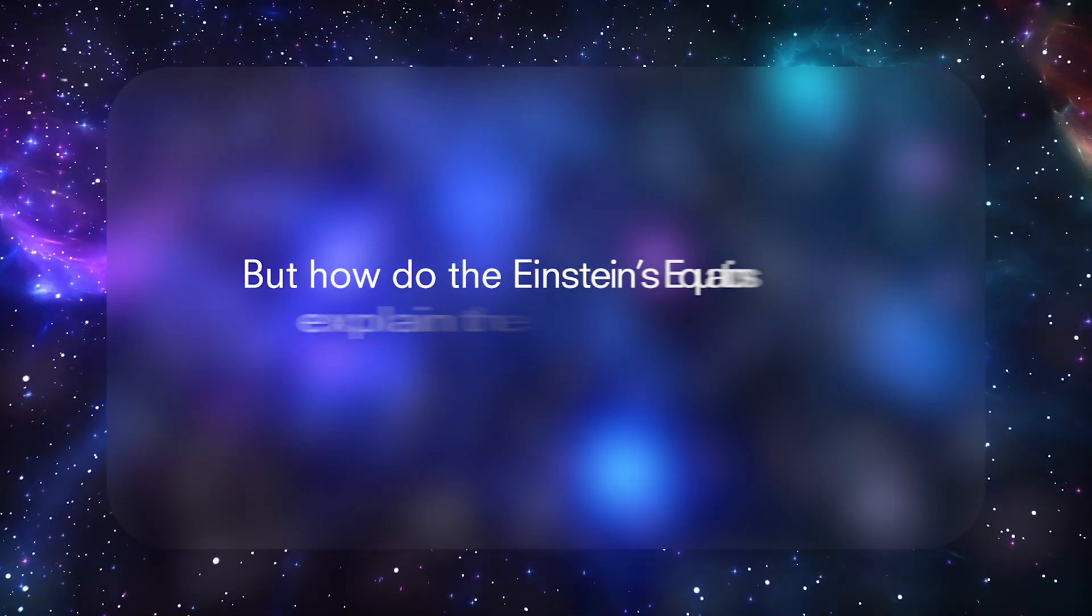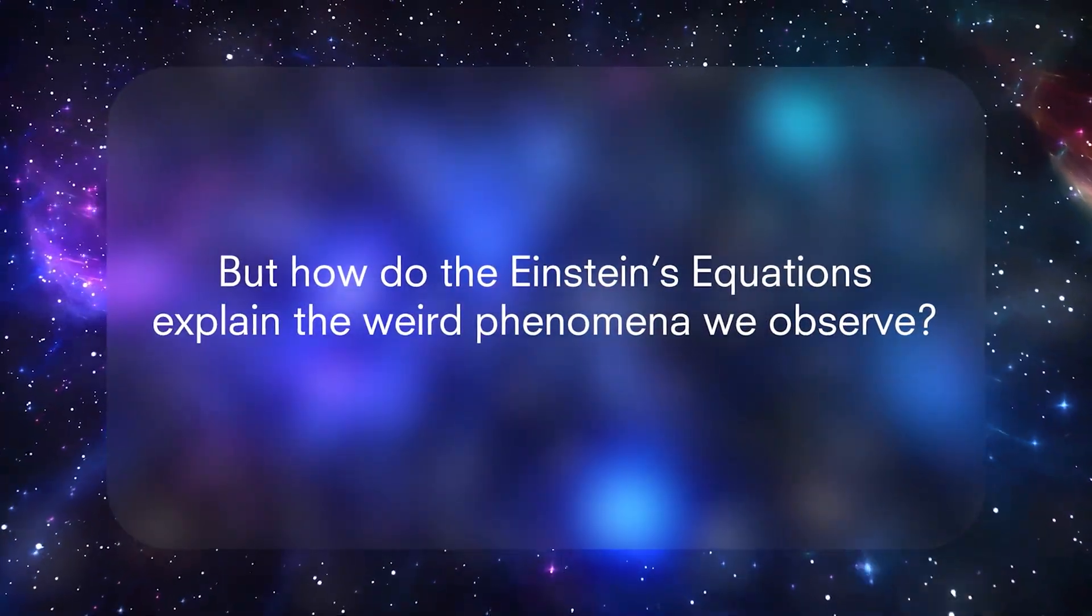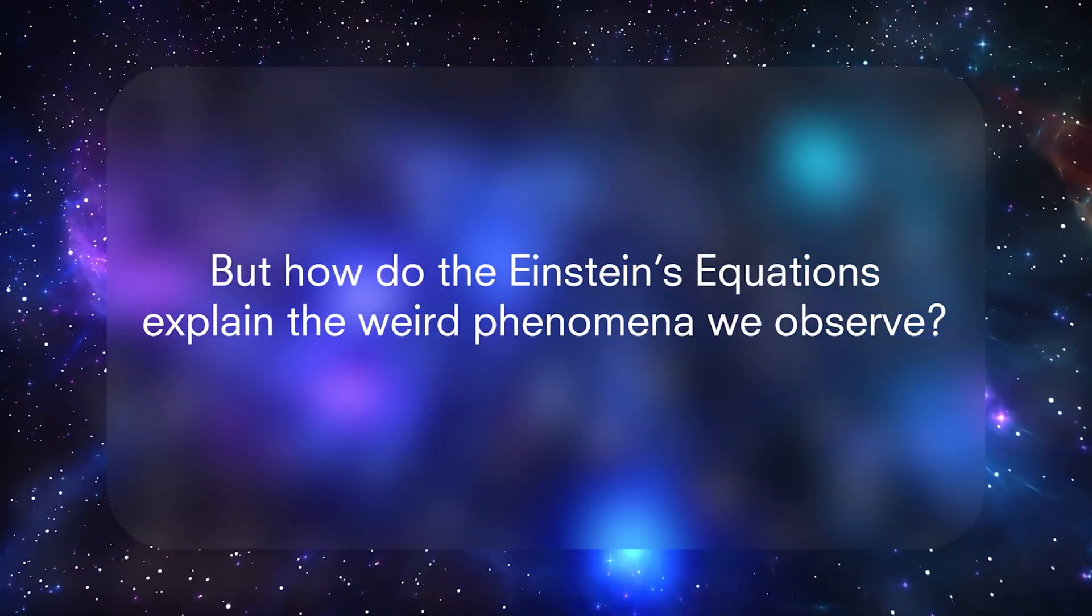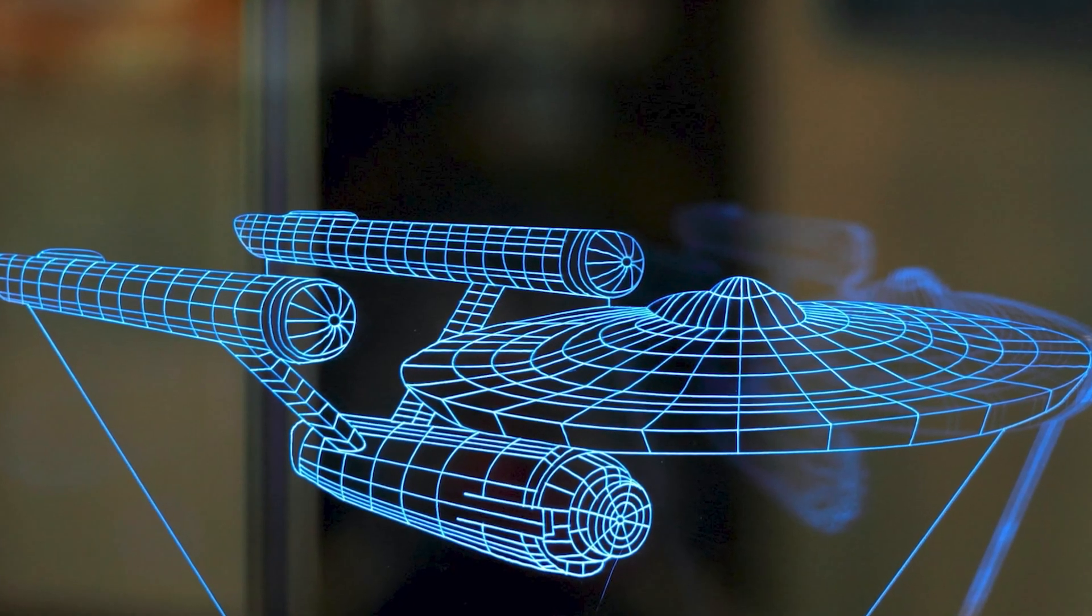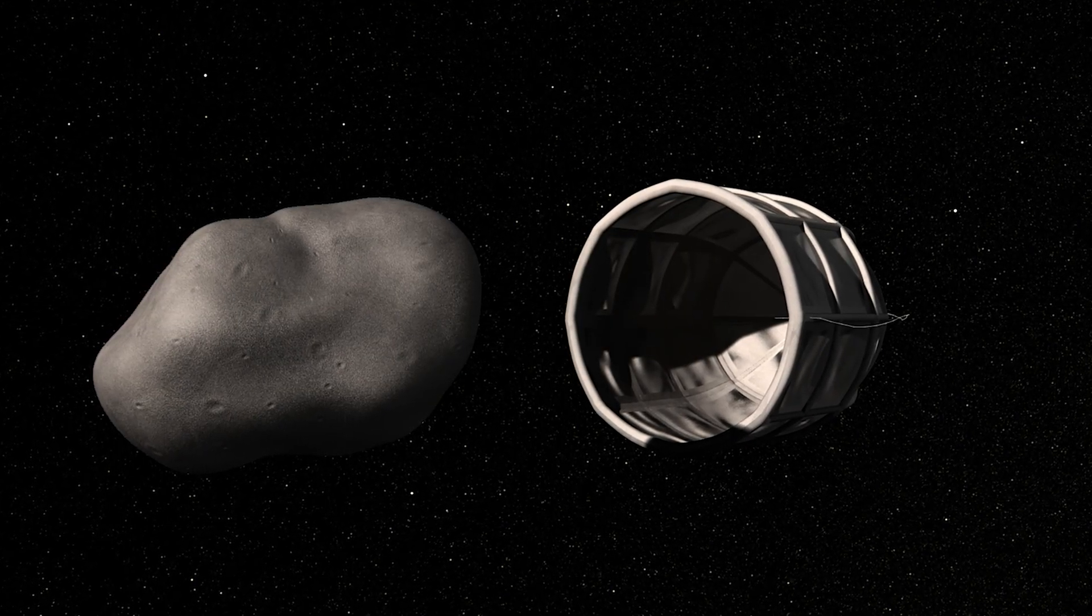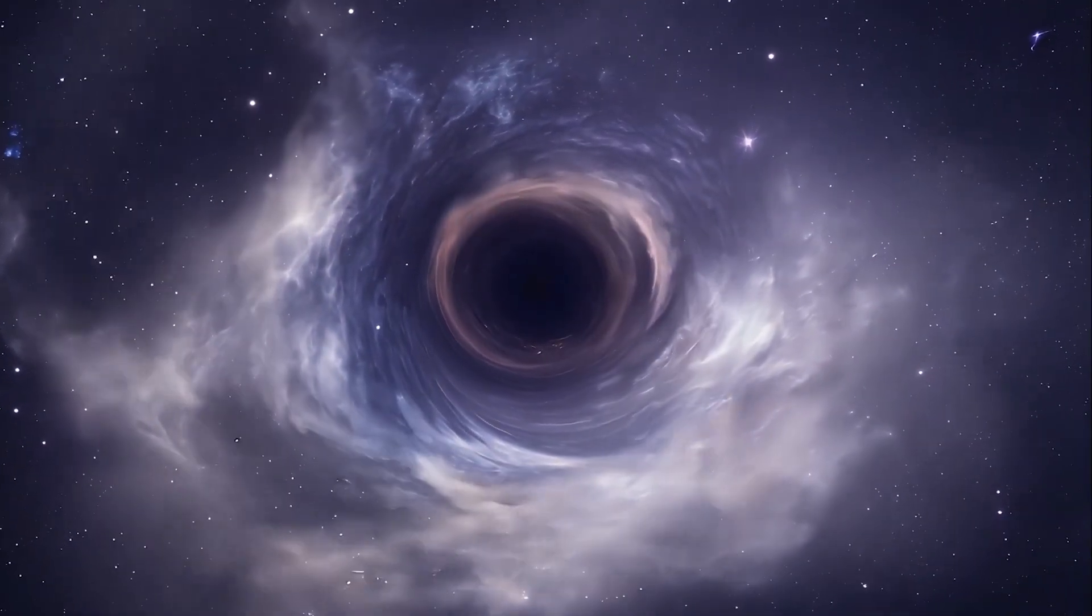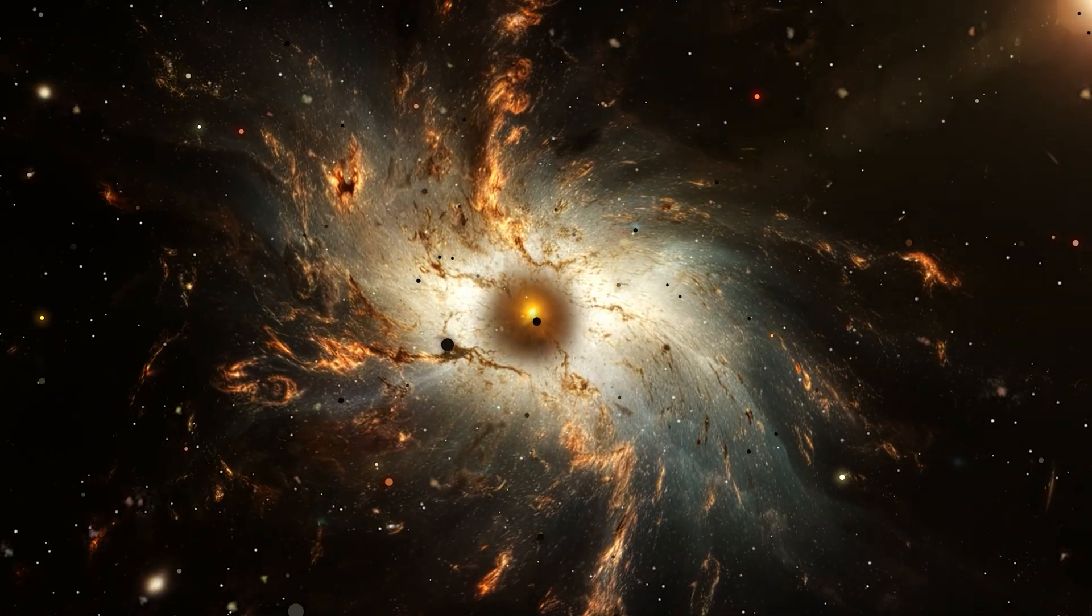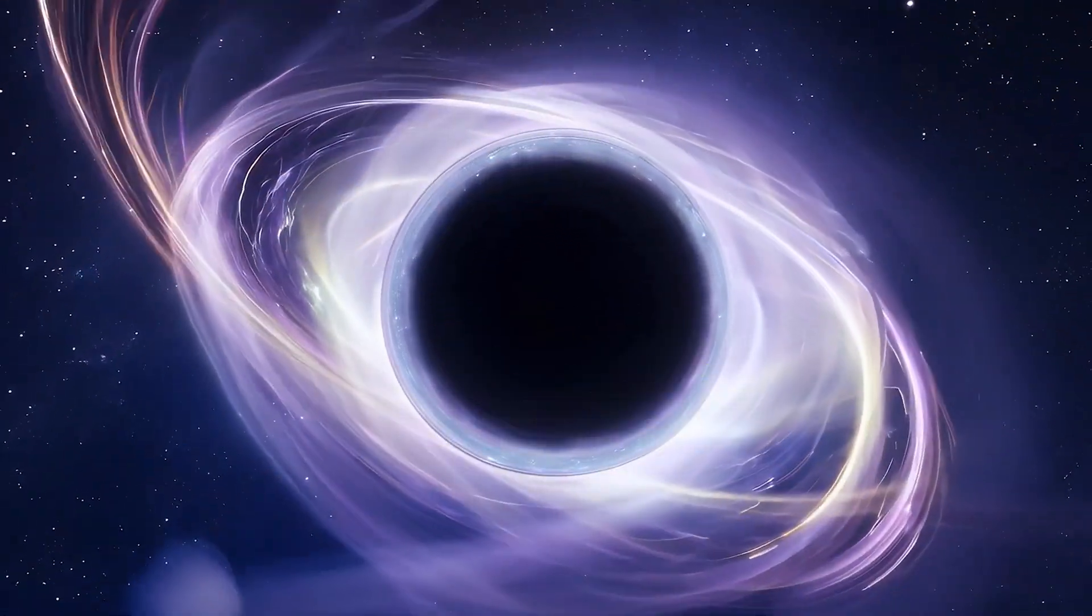So how do Einstein's field equations explain some of the strange phenomena we observe in the universe? Delve deeper, and you discover entire classes of weird predictions, scenarios that might seem ripped from science fiction yet come as a result of varying assumptions in the field equation. Black holes, white holes, and collapsing geometry.